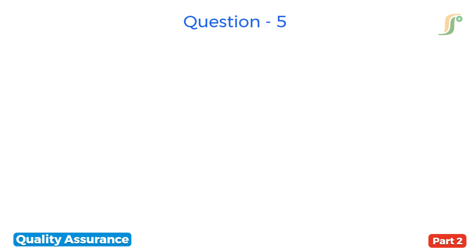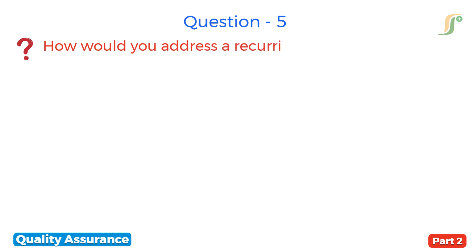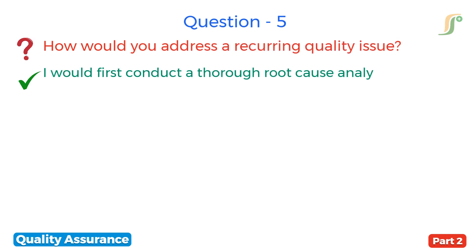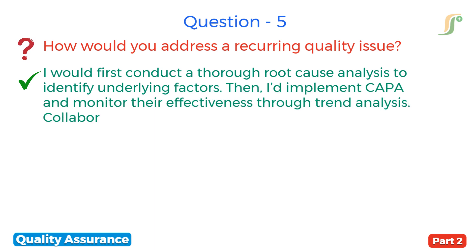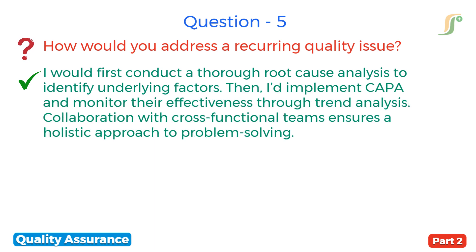The fifth question is: how would you address a recurring quality issue? I would first conduct a thorough root cause analysis to identify underlying factors. Then I would implement CAPA and monitor their effectiveness through trend analysis. Collaboration with cross-functional teams ensures a holistic approach to problem solving.